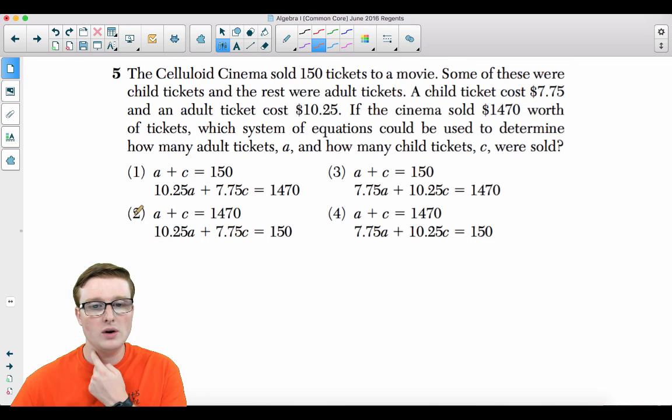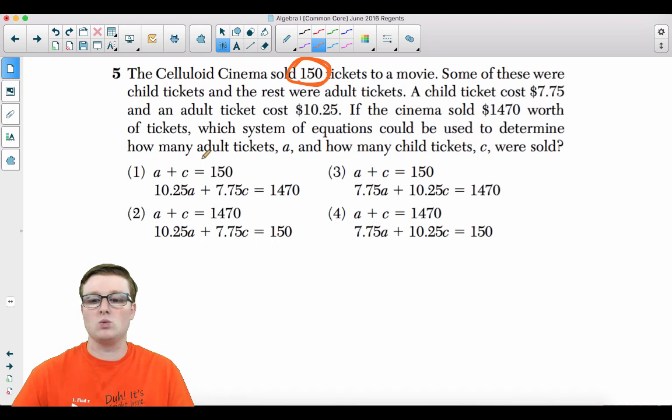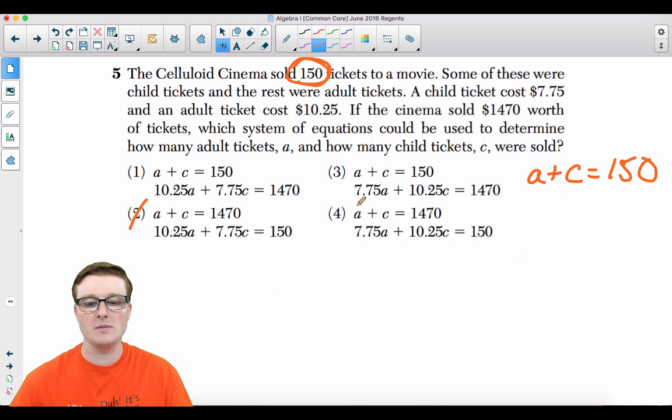Number five, the Celluloid Cinema sold 150 tickets to a movie. Some of these were child tickets and the rest were adult tickets. A child ticket costs $7.75 and an adult ticket costs $10.25. If the cinema sold $1,470 worth of tickets, which system of equations could be used to determine how many adult tickets A and how many child tickets C were sold? So they definitely sold 150 tickets to a movie. Therefore A plus C has to equal 150.